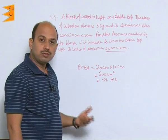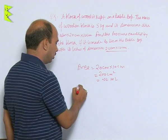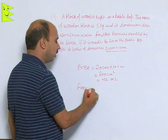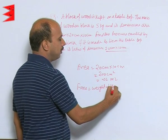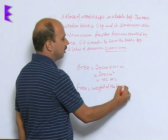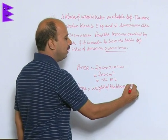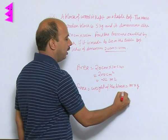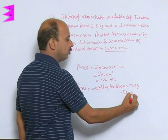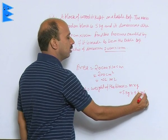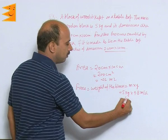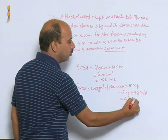Now force will be the weight of the block. Force is equal to weight of the block, that is equal to m into g. m is equal to 5 kg, g is 9.8 meter per second square, so you will be getting weight is 49 Newton.